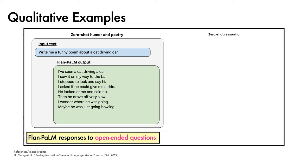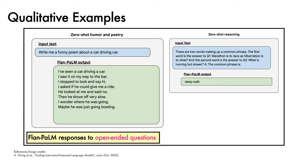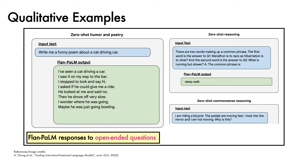The next example assesses zero-shot reasoning. The input text is: "There are two words making up a common phrase. The first word is the answer to Q1: 'Marathon is to race as hibernation is to what?' And the second word is the answer to Q2: 'What is running, but slower?' The common phrase is..." Flan-PaLM output: "Sleepwalk." Finally, an example of zero-shot common sense reasoning. The input text is: "I am riding a bicycle. The pedals are moving fast. I look into the mirror and I am not moving. Why is this?" The Flan-PaLM output is: "I am on a stationary bike."